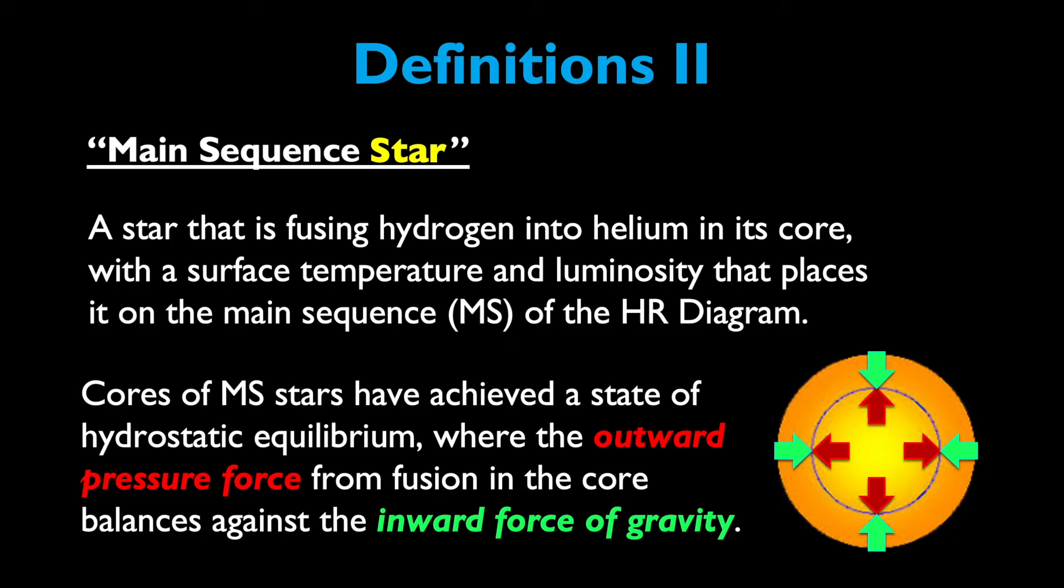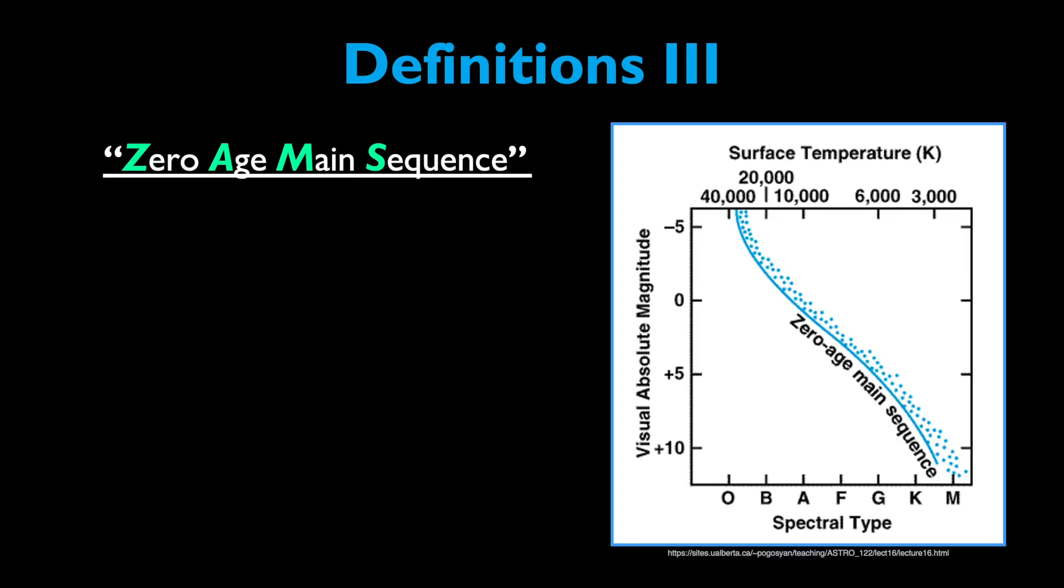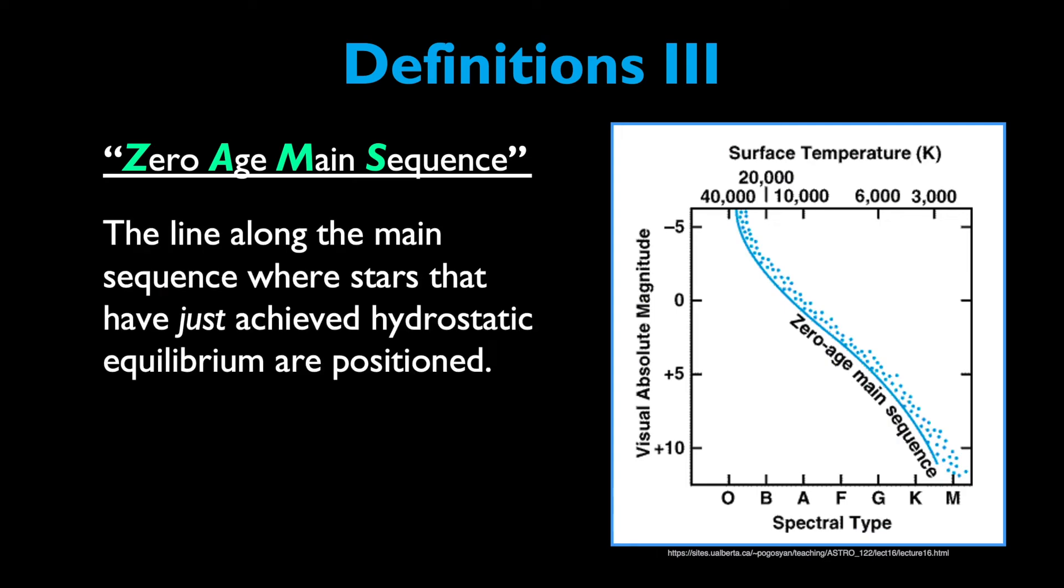The third definition for us to become familiar with is ZAMS. This is an acronym standing for the Zero Age Main Sequence. It's the line along the main sequence where the stars that have just achieved hydrostatic equilibrium would be positioned, usually on the left-hand side of the main sequence itself.